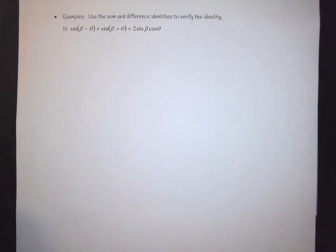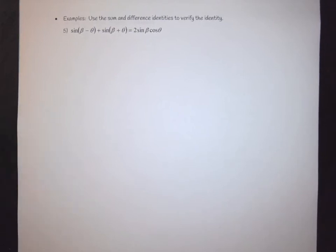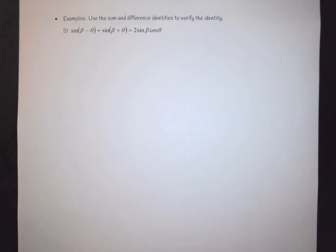Welcome back. In this video, we are going to look at how to verify a sum and difference identity. Verifying an identity essentially means that you want to prove, through use of the identities, that one side of an equation equals the other. This is like doing a proof. Usually, when trying to do a proof, the easiest thing to do is to start with the most expanded side and see if you can condense it down or combine terms to get them to cancel.